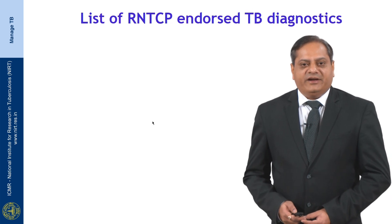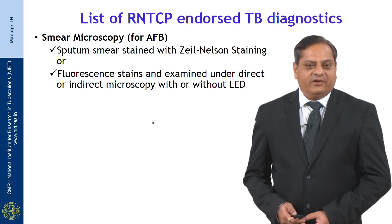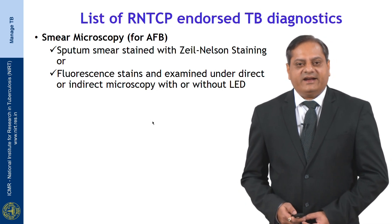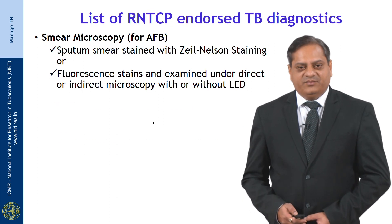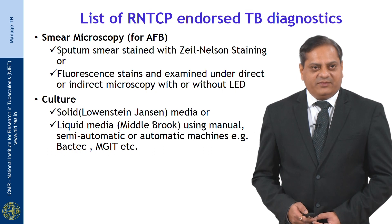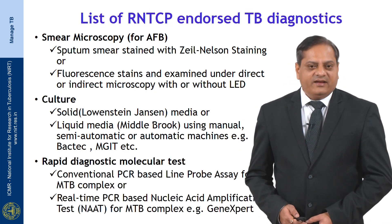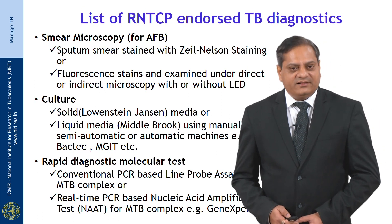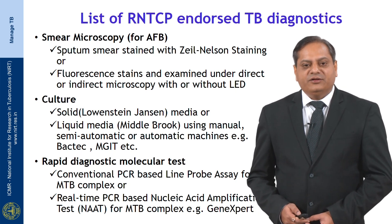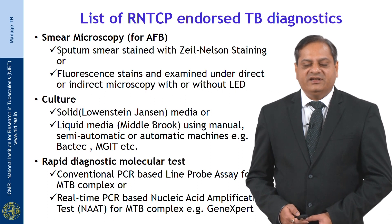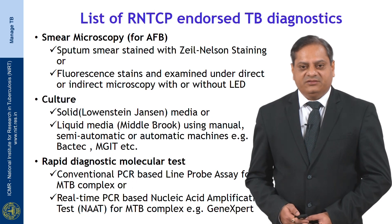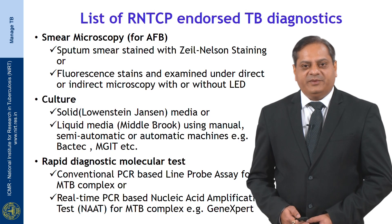RNTCP-endorsed TB diagnostics include: smear microscopy for AFB using Ziehl-Neelsen staining or fluorescent stains examined under direct or indirect microscopy with or without LED; culture on solid media such as LJ media or liquid culture, whether semi-automatic or automatic such as BACTEC or MGIT; and rapid molecular diagnostic tests including real-time PCR-based line probe assay for MTB complex or nucleic acid amplification tests. One example is GeneXpert, called CBNAAT in India. Another test being validated is TrueNAT.